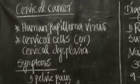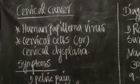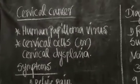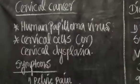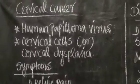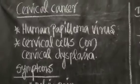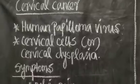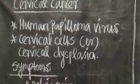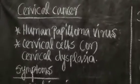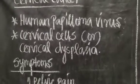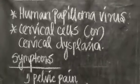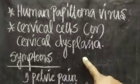Hi students. Last class we covered ultrasound scanning, amniocentesis, and CVS — that is chorionic villus sampling. Today we are going to see about cervical cancer. It is caused by a sexually transmitted disease. The virus is known as human papilloma virus, or HPV, and it is the cause of abnormal cervical cells, also called cervical dysplasia.